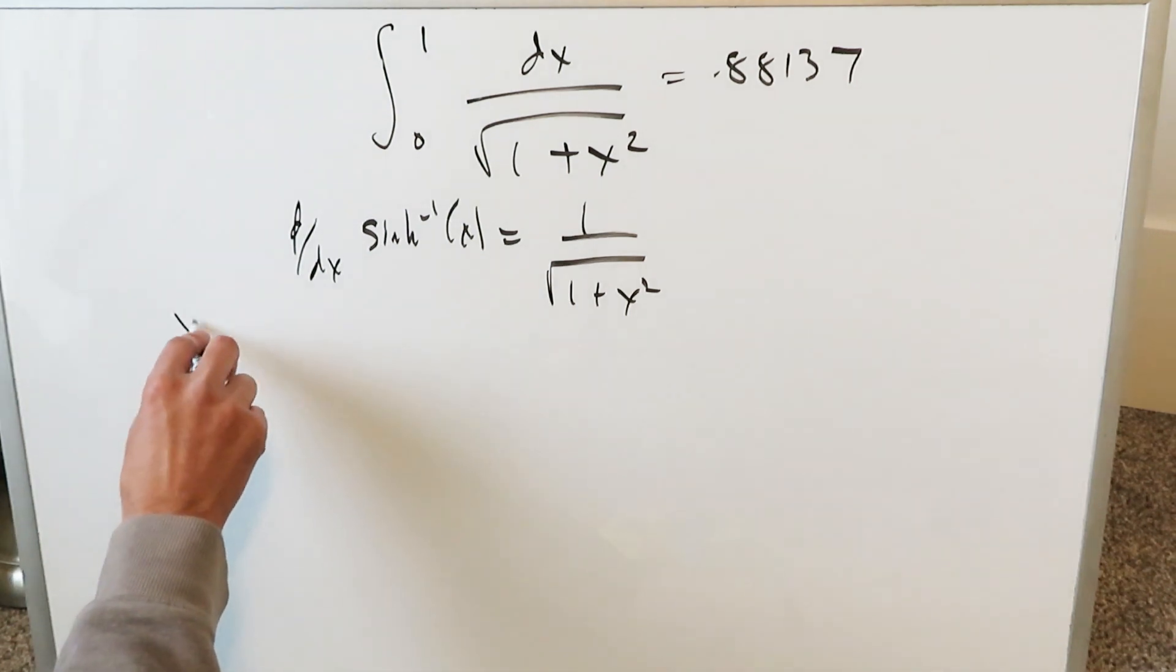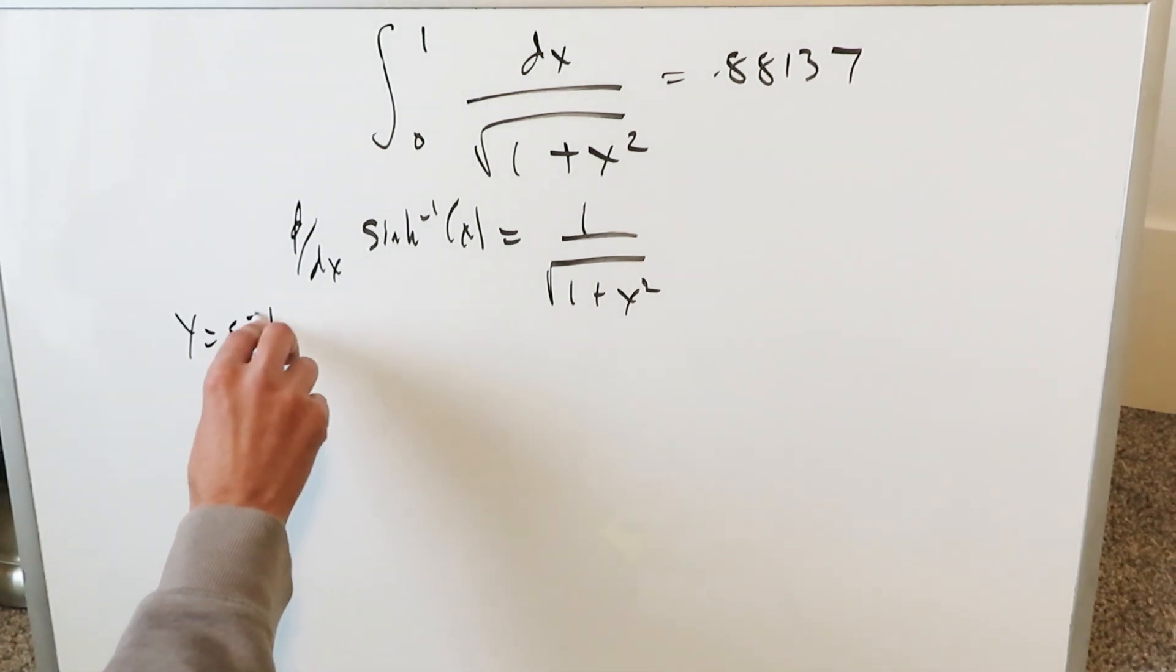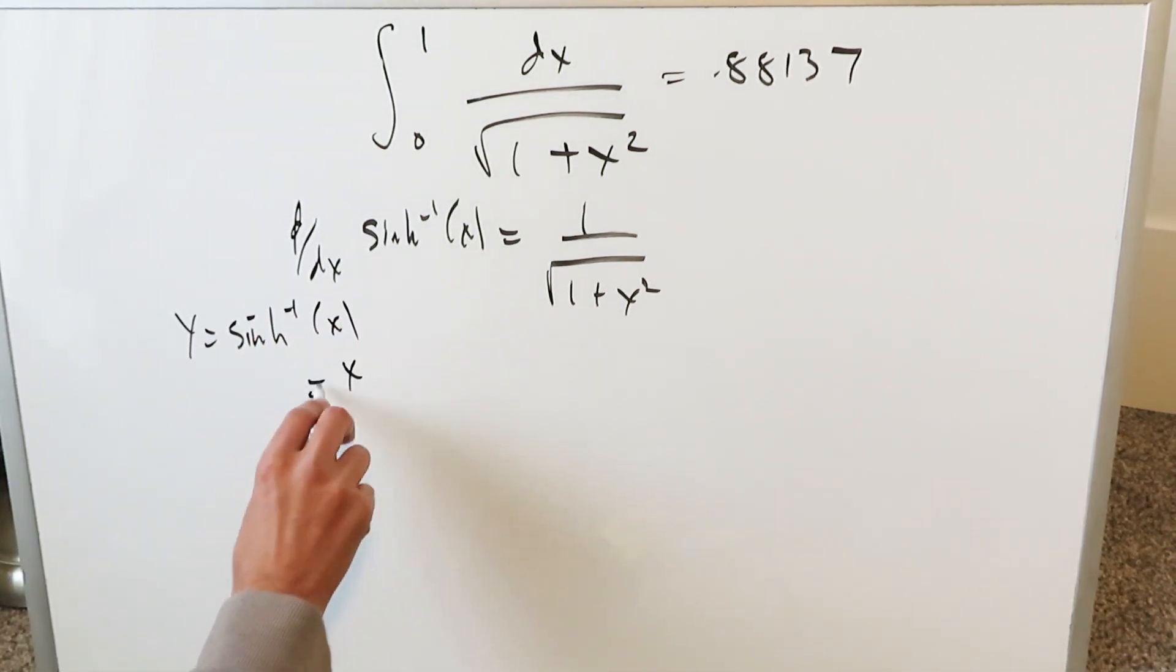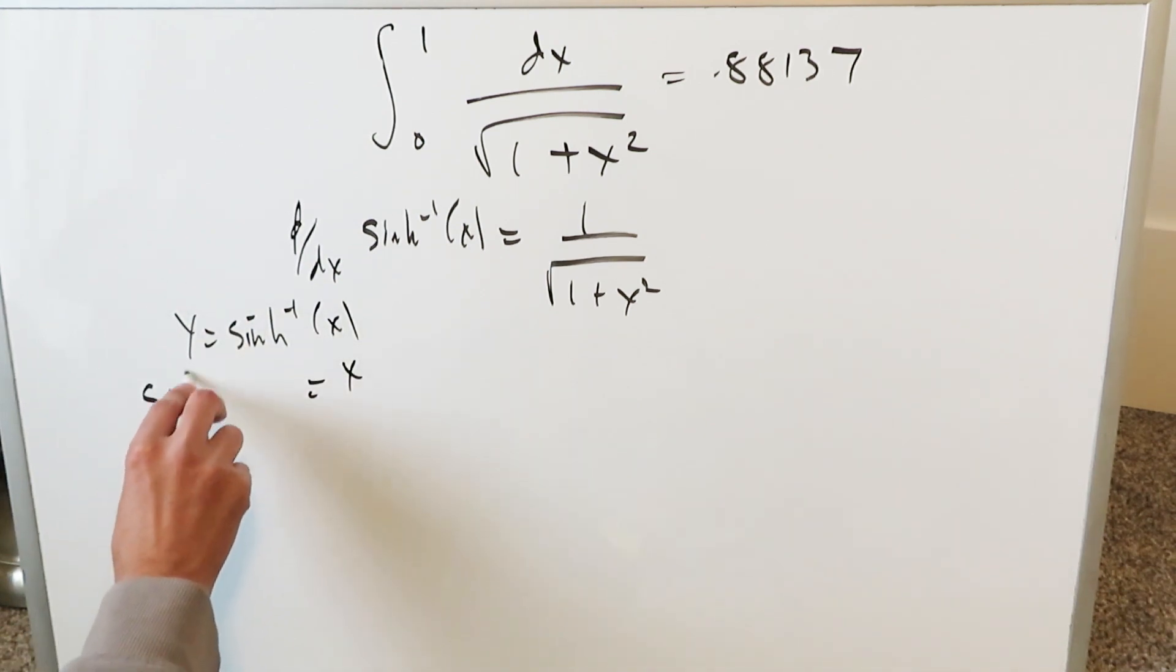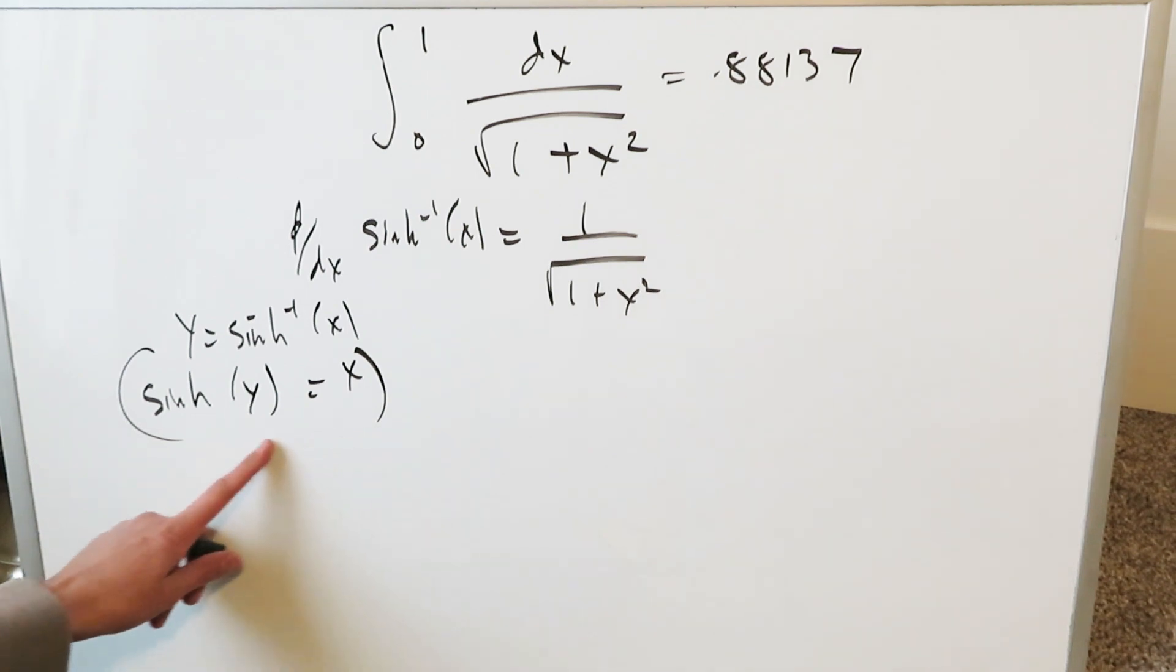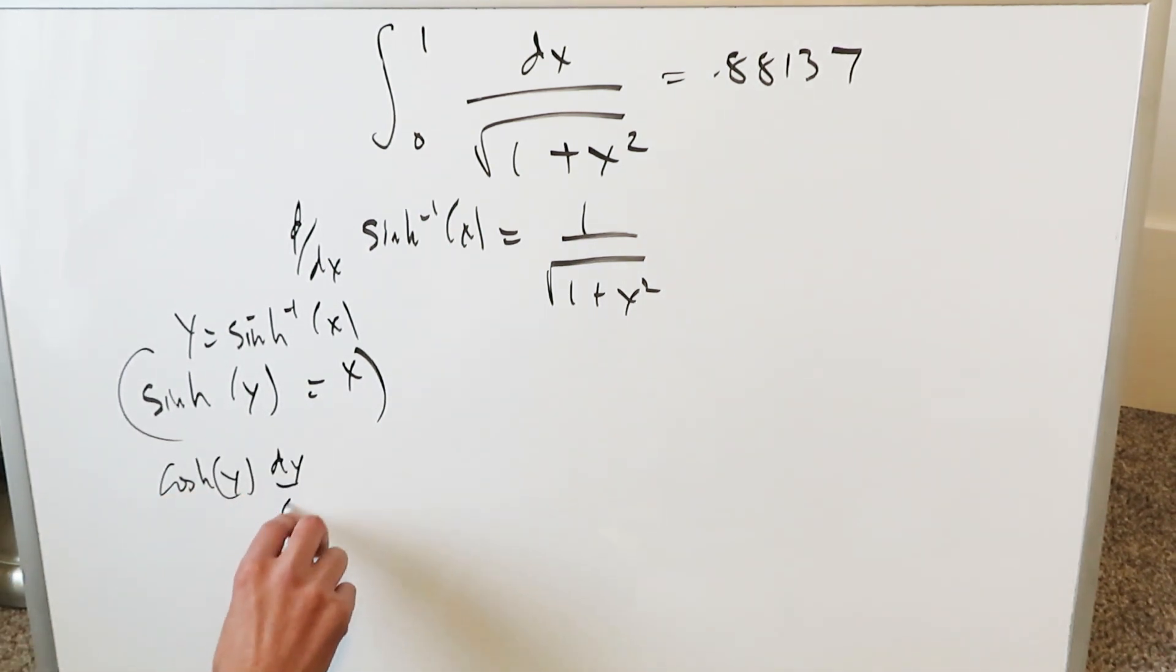Well it's like this. Y is equal to inverse hyperbolic sine x. You solve for x. You push it on the other side. You're looking at hyperbolic sine of y. You do the implicit differentiation of this. You'll have cosh y dy over dx is equal to 1. Solve for dy over dx is equal to 1 over hyperbolic cosine y.